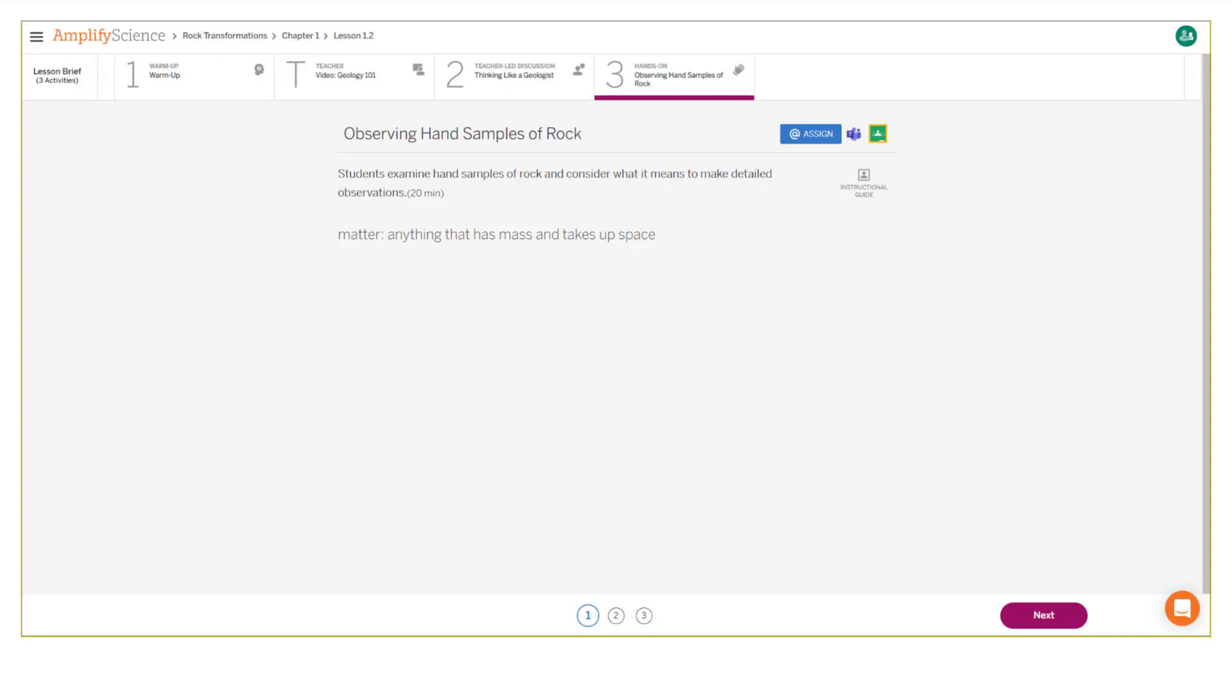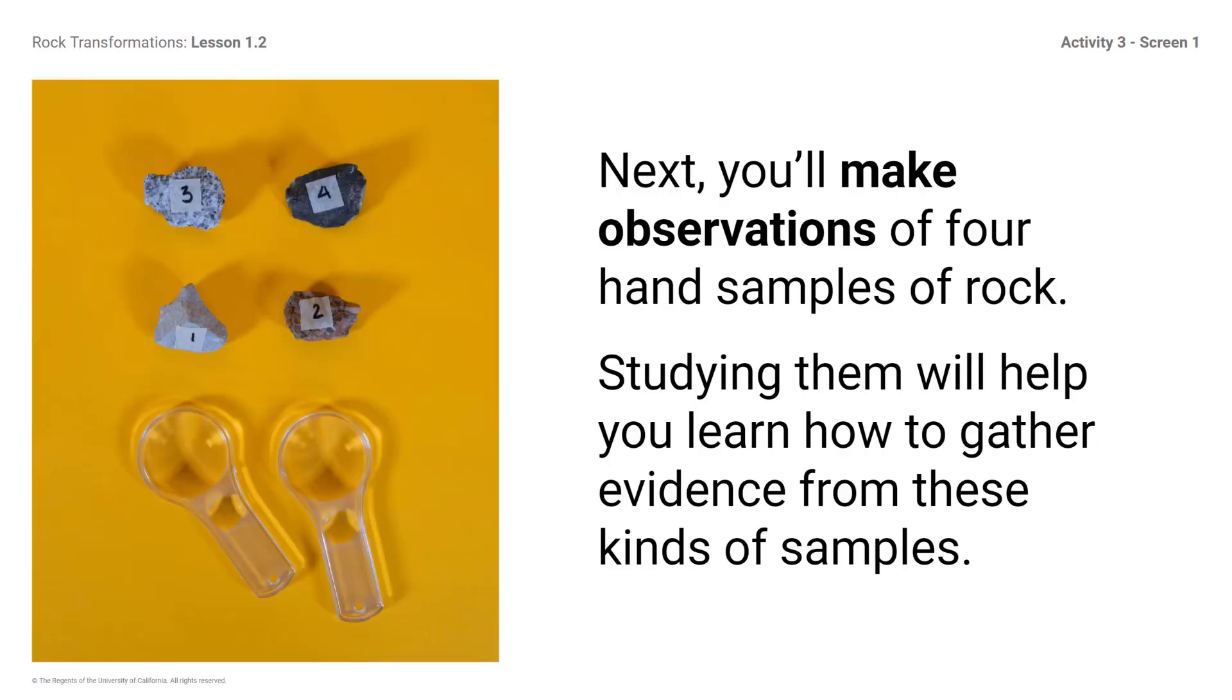Here's what your student screen looks like for this part of the lesson. Next, you'll make observations of four hand samples of rock. Studying them will help you learn how to gather evidence from these kinds of samples.